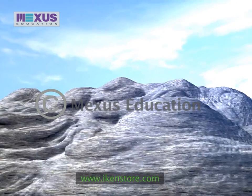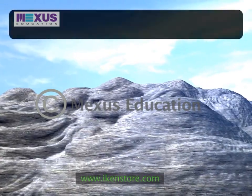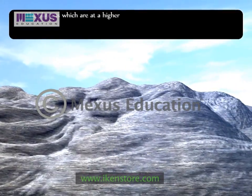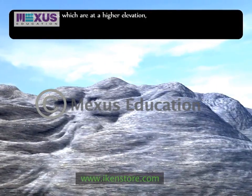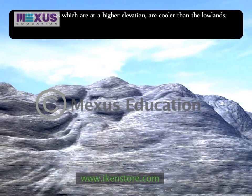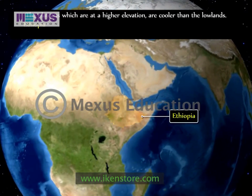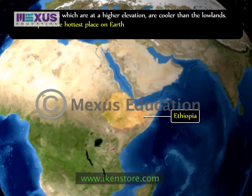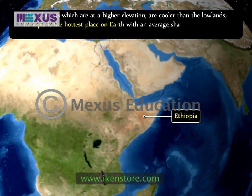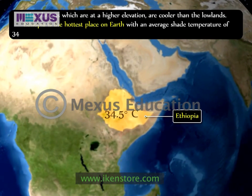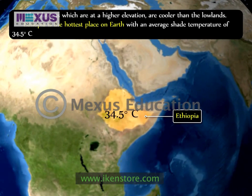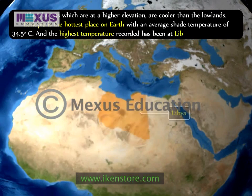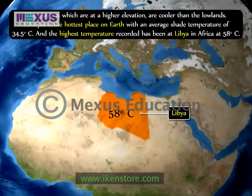Although most of Africa is hot throughout the year, the plateaus at higher elevation are cooler than the lowlands. Ethiopia in Africa is the hottest place on earth, with an average shade temperature of 34.5 degrees Celsius, and the highest temperature recorded has been in Libya, Africa, at 58 degrees Celsius.